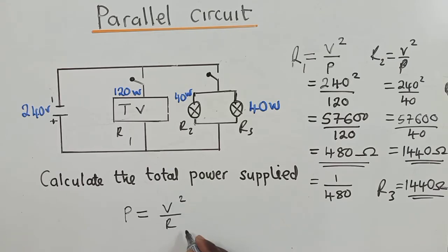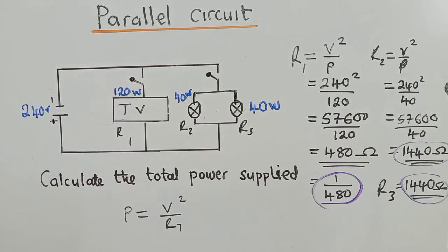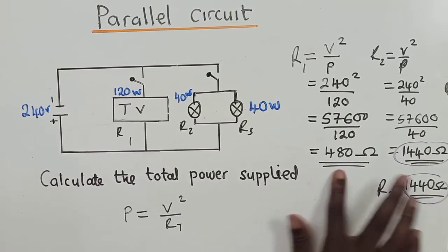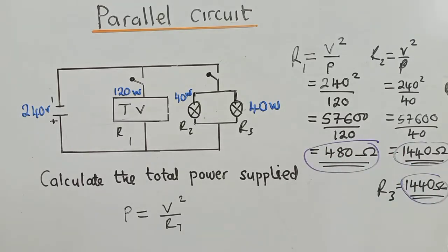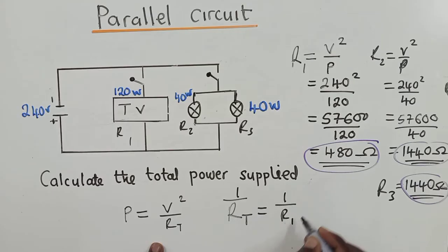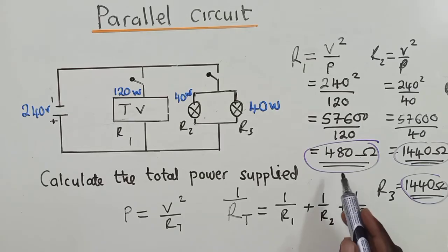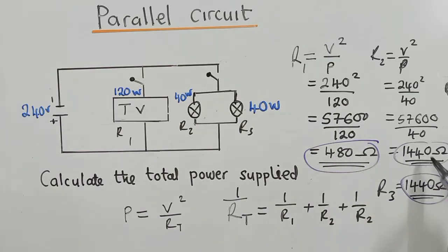Power equals voltage squared over total resistance. We have three resistances in parallel. For a series circuit we would just add them directly, but since this circuit is parallel, to find the total resistance we need to use the inverse formula.